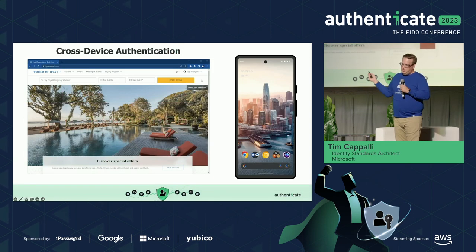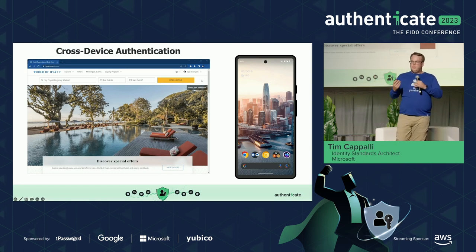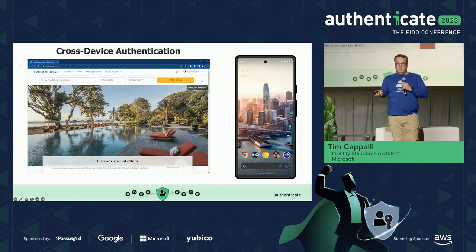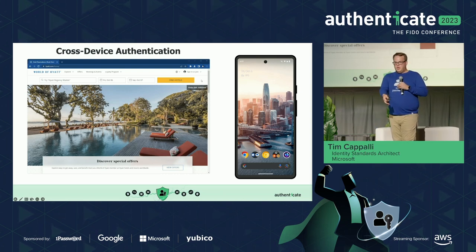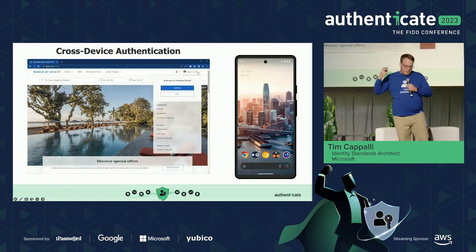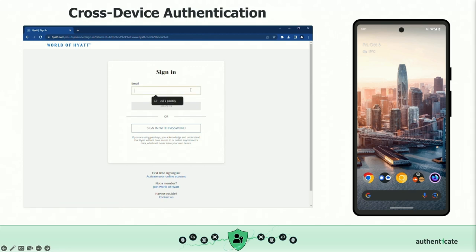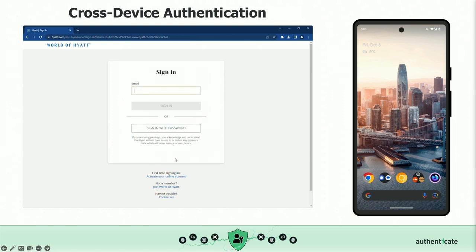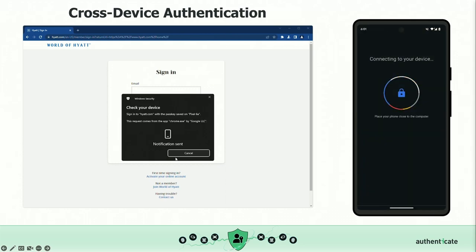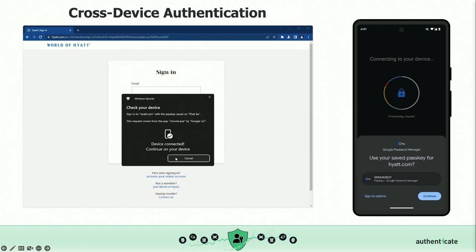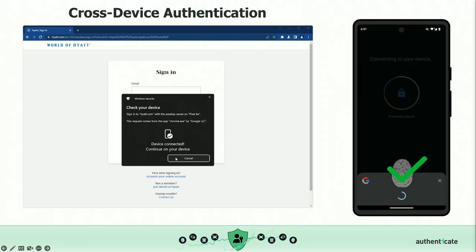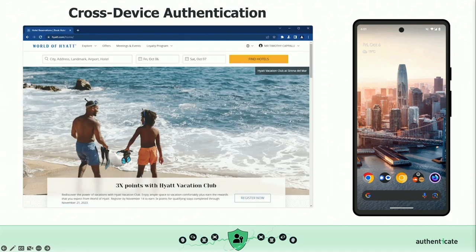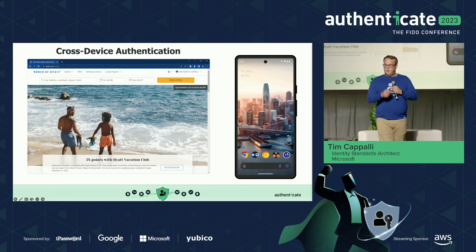The next feature is cross-device authentication — super important for bootstrapping. We're going to be in a world for a few years where you don't have a passkey for, say, Hyatt on your desktop, but you may have one on your phone. So instead of leaving you stranded with a phishable credential on desktop, let's use your passkey from your phone. In a live example on Hyatt: I click on the email field, get a conditional UI option to use another device, click on my Pixel, get a push notification asking 'do you want to use your passkey for Hyatt?', click continue, do a biometric check, and I'm signed in — completely phishing resistant.